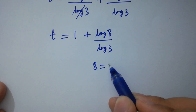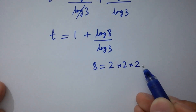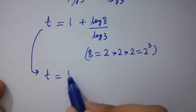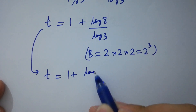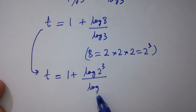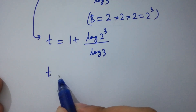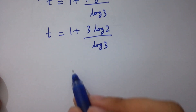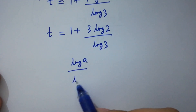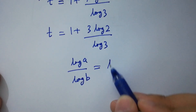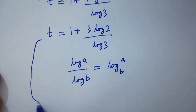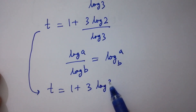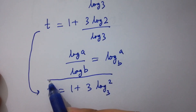As 8 equals 2 times 2 times 2, which is 2 cubed, t equals 1 plus log 2 cubed over log 3. Applying the power rule, this becomes 1 plus 3 log 2 over log 3. Using the change of base formula, log A over log B equals log A to the base B, so t equals 1 plus 3 log 2 to the base 3.